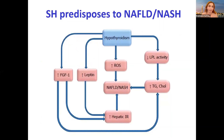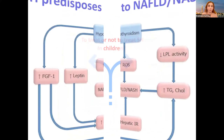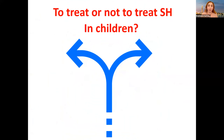Subclinical hypothyroidism predisposes to NAFLD either by increasing FGF1, serum leptin, or by increasing triglycerides and cholesterol, creating a degree of hepatic insulin resistance which aggravates the situation. Now, the very difficult question I'll try to answer: to treat or not to treat in children?